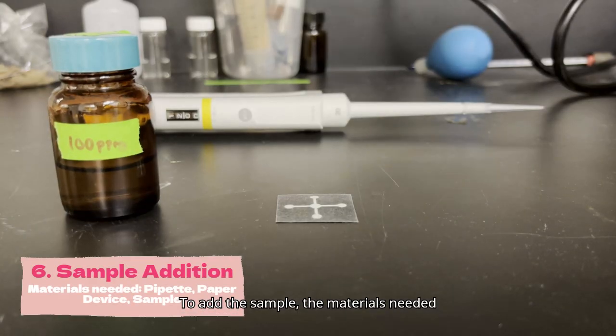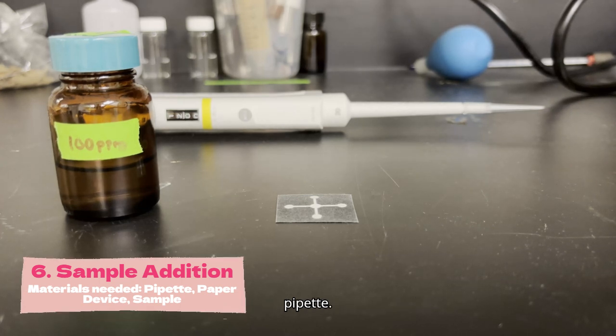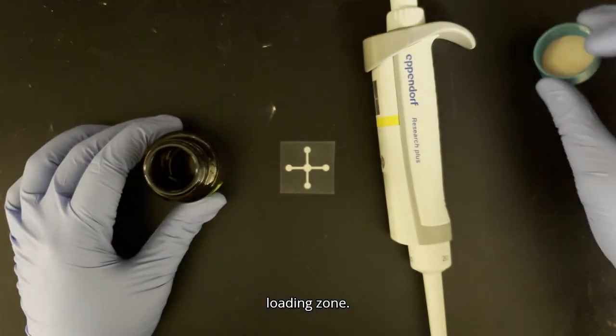To add the sample, the materials needed are the paper device, the sample, and a pipette. Pipette the sample into the sample loading zone.